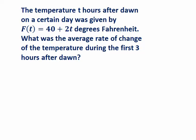Next, let's look at an application problem where there are units involved. In this case, our function is describing the temperature as a function of time. So in particular, after t hours after dawn, the temperature outside is given by this formula, 40 plus 2t. So for example, at dawn, t would be 0, and the temperature outside would be 40 degrees. Two hours later, t would be 2, and so the temperature would be f(2), which would be 44 degrees.